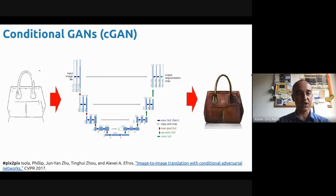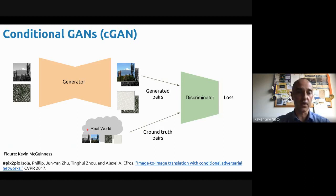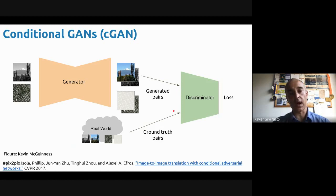For training Pix2Pix, you need to have pairs of whatever image translation you want to do. If you want to go from grayscale to color, you need a dataset of grayscale and color image pairs. If you want to draw the map of some urban area, you need the dataset of real images and real maps. And if you do that, you are able to train models to translate images in different modalities.